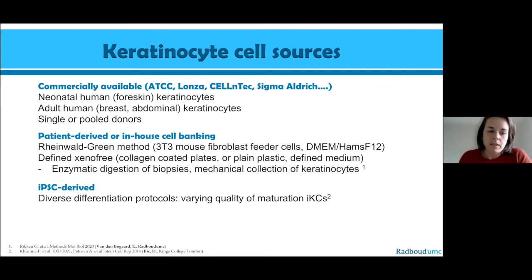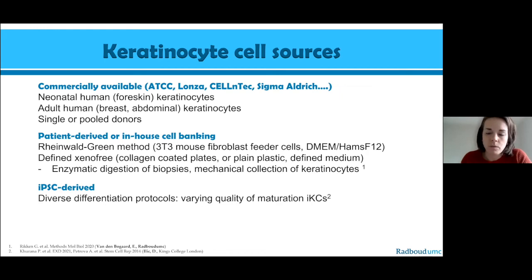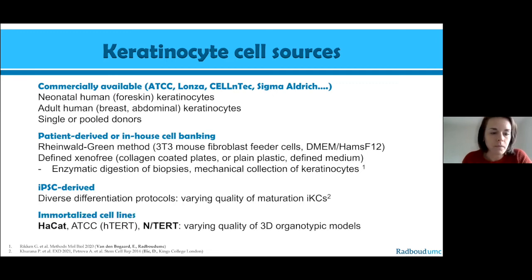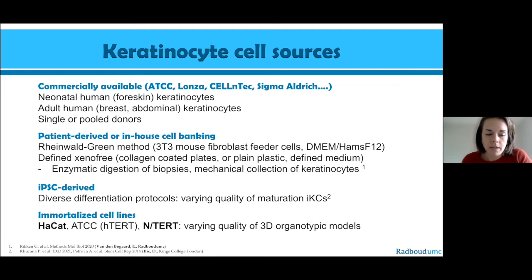iPSC-derived keratinocytes have varying success rates in maturation quality, and not all make nice organotypic models. The group from Dusko Illich at King's College London does impressive work here. Another alternative for primary cells when availability or cost is an issue is immortalized cell lines. Traditionally, HaCaT cells are the most commonly found in the literature, though they have some downsides. More recently, we have been working with TERT-immortalized keratinocytes, which I will discuss.